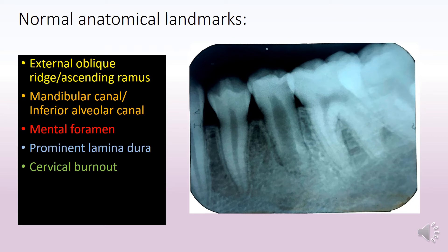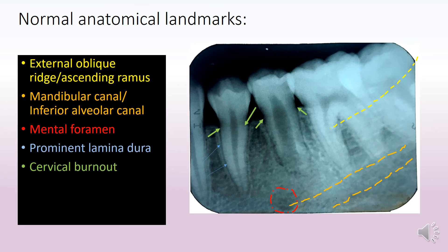Moving on to the normal anatomical landmarks on this radiograph: first, the external oblique ridge, seen as a faint shadow over the posterior molar region; the mandibular canal, also called the inferior alveolar canal; the mental foramen, generally seen in the mandibular premolar region; a very prominent lamina dura, especially around the first premolar; and cervical burnout, seen as radiolucent areas in the cervical portion of the premolars, which mimics caries.